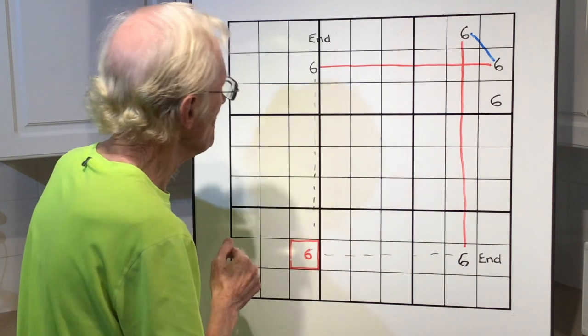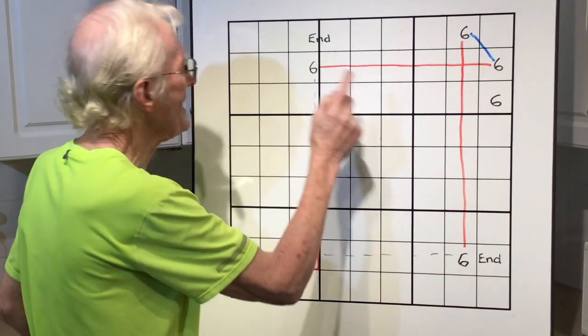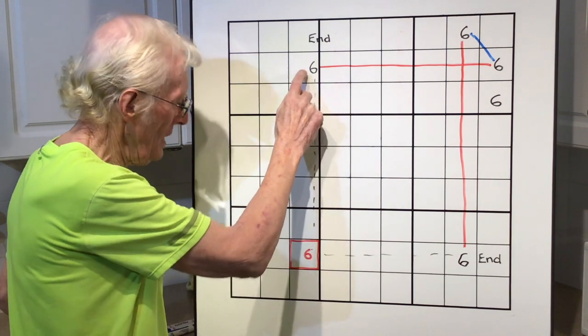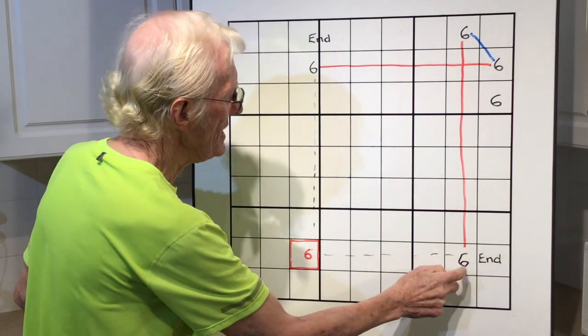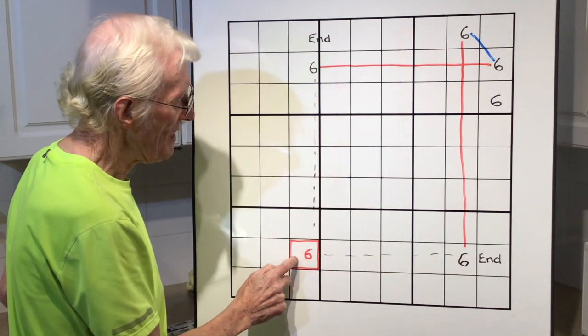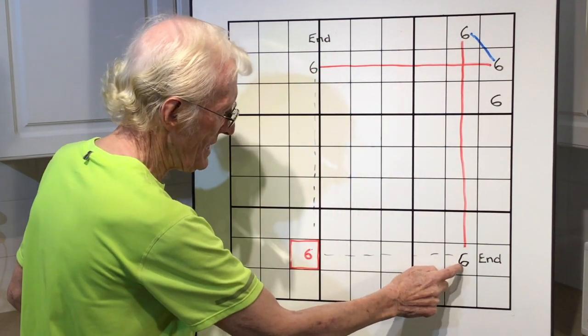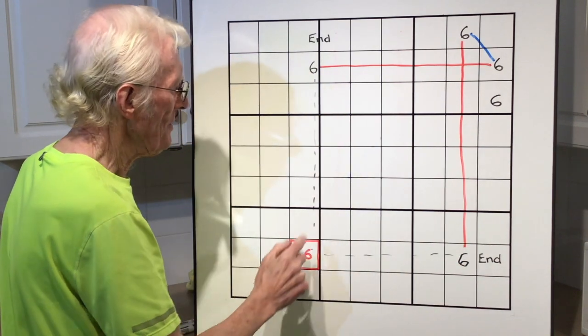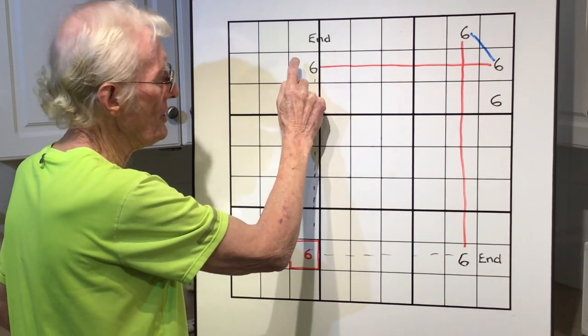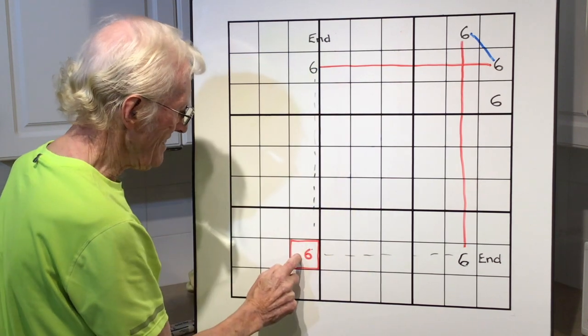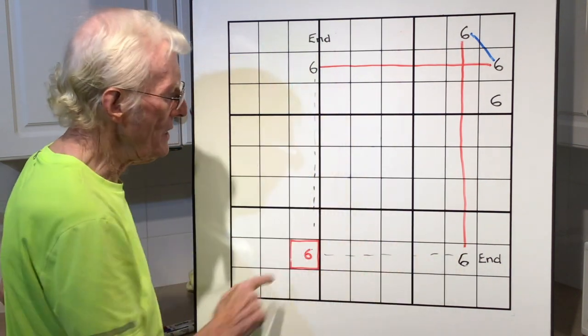If this is true, this cannot be true. If that's true, that cannot be true. Now, if this is true, this 6 can go. But if this is true, this 6 can go. So, whichever one becomes a 6 in here, this means it can't be a 6. If we go the other way, true, false, true, false. In this case, this 6 was the true one. And again, in both cases, whether that's a 6 or whether that's a 6, this cannot be a 6. One of them will be a 6.